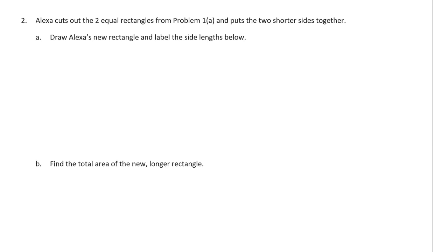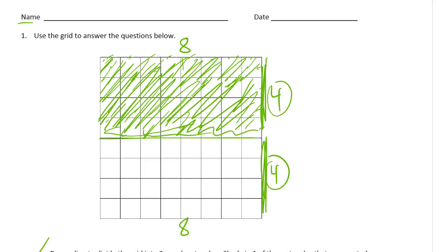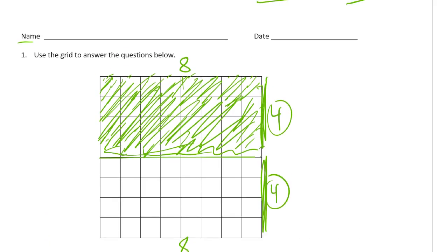Alexa cuts out the two equal rectangles from problem 1A and puts the two shorter sides together. Draw Alexa's new rectangle and label the side lengths below. So she's going to put the two shorter sides together, which means it's going to be two fours put together. We're going to make an eight.